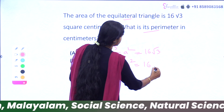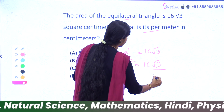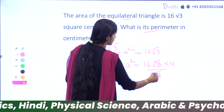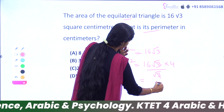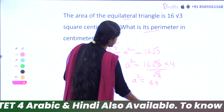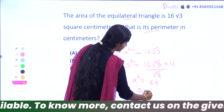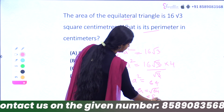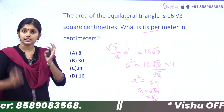We set √3 by 4 times a squared equal to 16√3. We cancel √3 from both sides, giving a squared equals 64. So a equals √64, which equals 8.